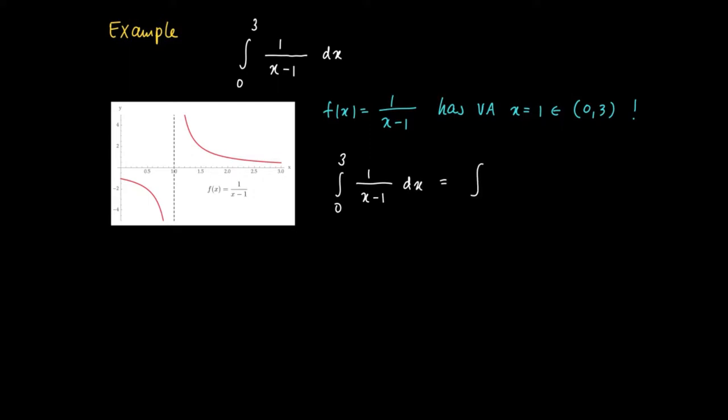This should be the sum of two integrals: 0 to 1 of 1 over x minus 1 dx. Well, consider the first integral from 0 to 1.